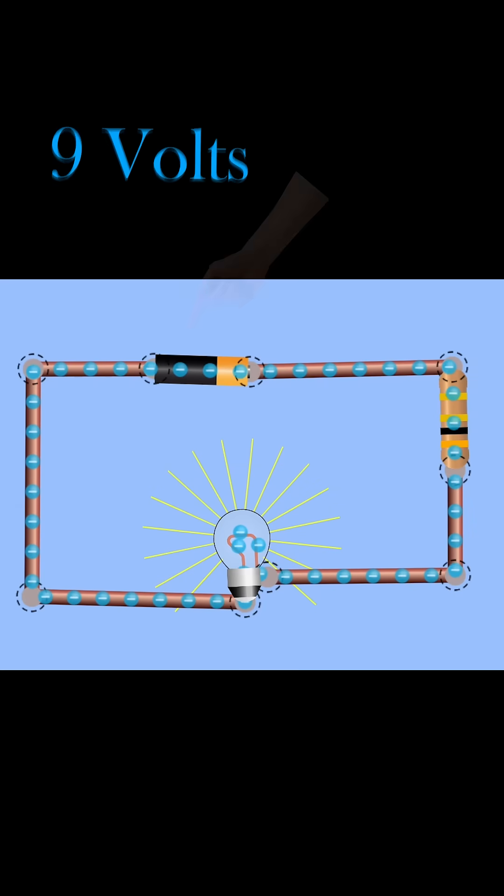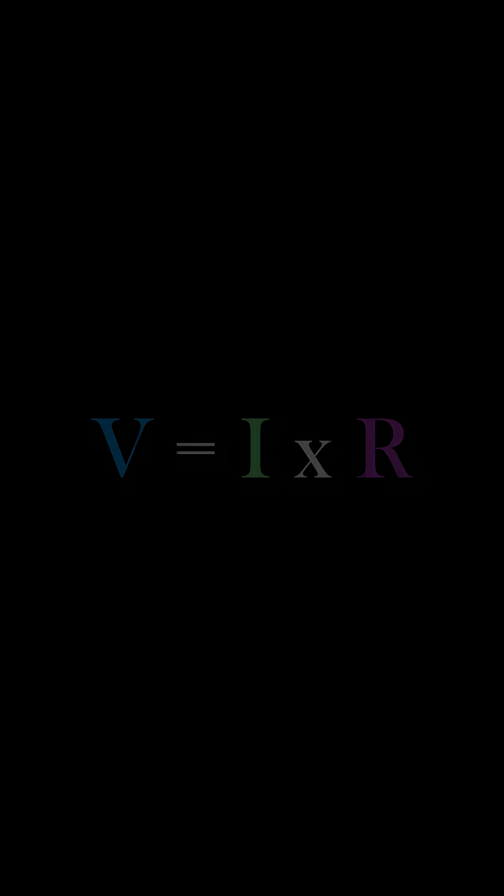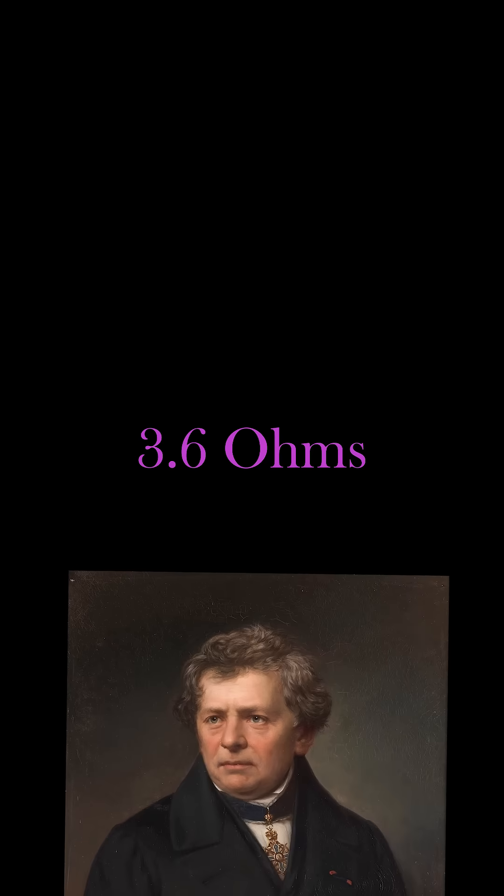Let's say I got a 9-volt battery and a current of 2.5 amps. What's the resistance? We can use Ohm's law to calculate it. We take 9 divided by 2.5, which is 3.6 ohms. Damn, he even got units named after him.